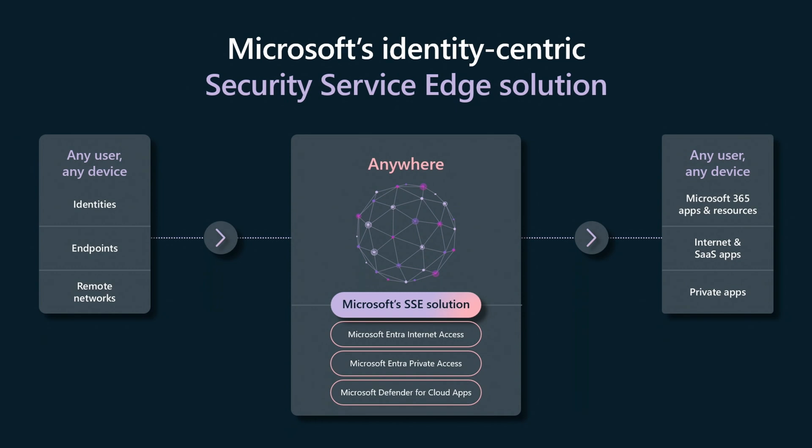If the resource is in AWS, no problem. If the resource is on-premise, no problem. If it's a website or any destination — internet access enables you to protect the user's device as they interact with the internet. Private access enables the connectivity model to reach those resources without joining a network. There's no IP address assigned to the client, so there's no lateral movement possible.